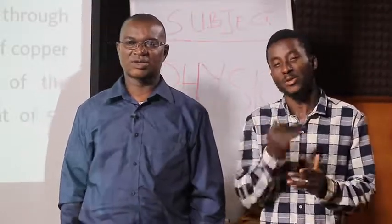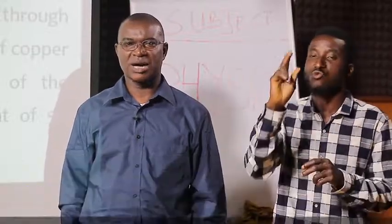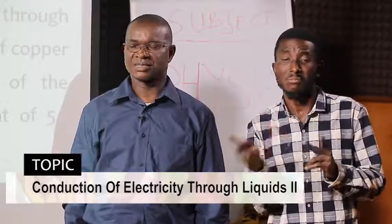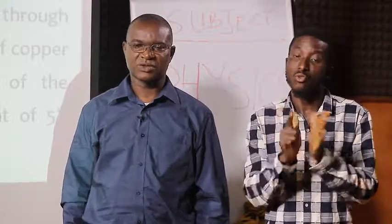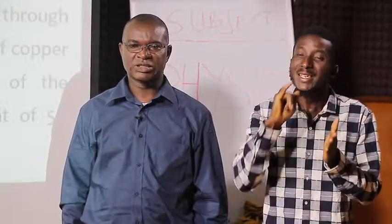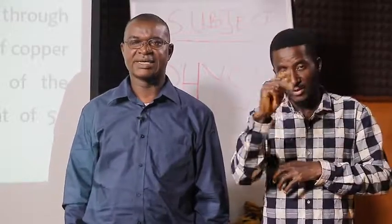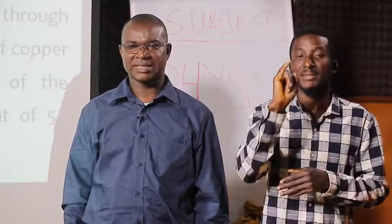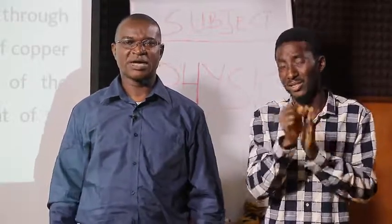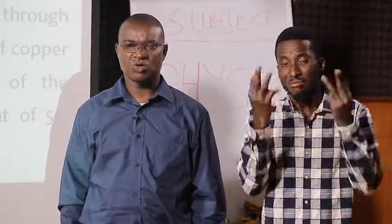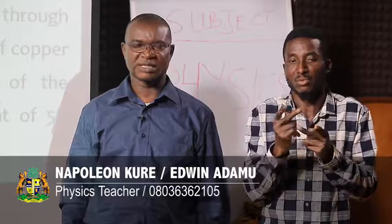Hello learners, you are welcome to another session of our e-learning program, the subject physics. I'm Napoleon Kure. We are looking at the second part of conduction of electricity through liquids. We looked at two major laws given by Faraday. The first talks about the relationship between mass and quantity of charge, M and Q, given as M equals ZIT — a very important formula. The second law talks about the relationship between masses and chemical equivalents, which can also be used as a mathematical tool.